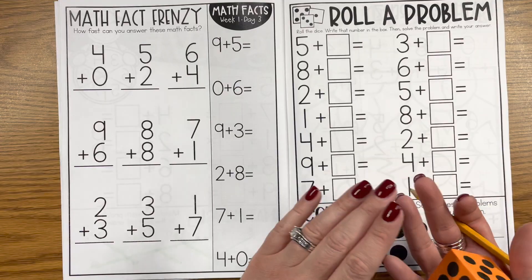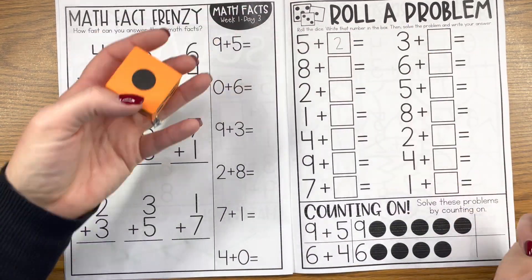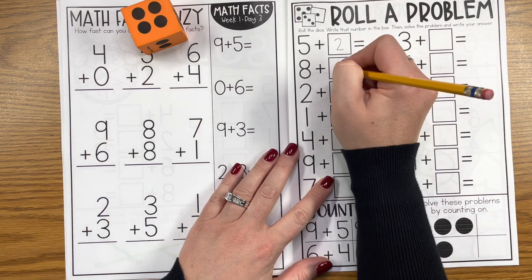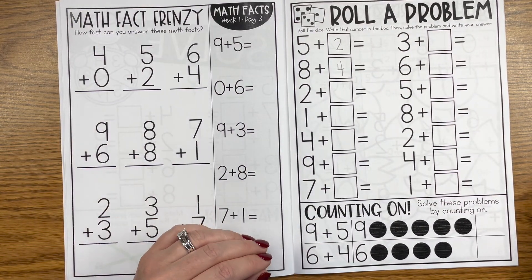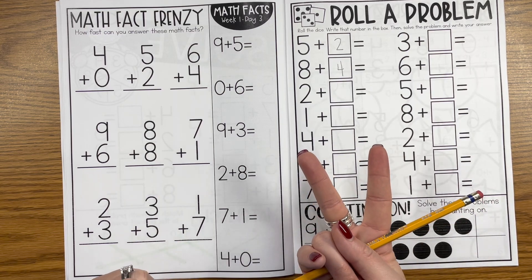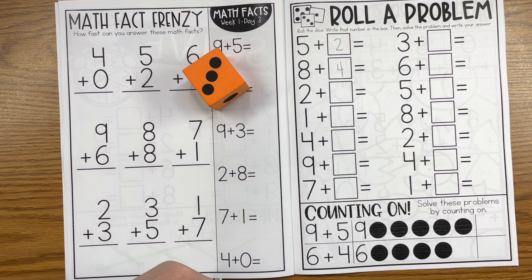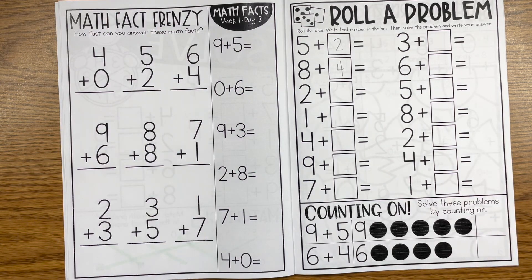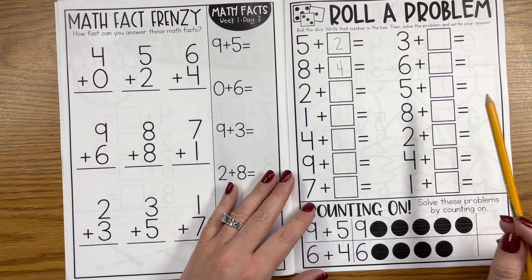On day three you'll go ahead with your math facts and then you'll roll a problem. So we'll roll 5 plus 2, find the sum, 8 plus 4, find the sum, and so on. With subtraction these are often reversed that way you can roll the dice and subtract 2 or subtract 3. Maybe you want to use two dice, whatever works for you.